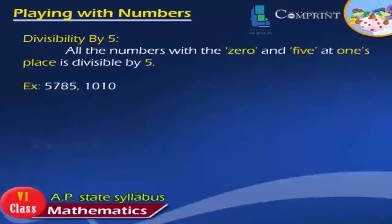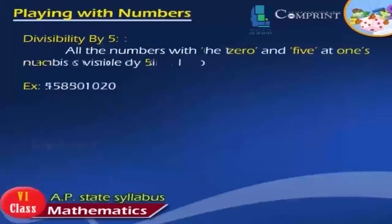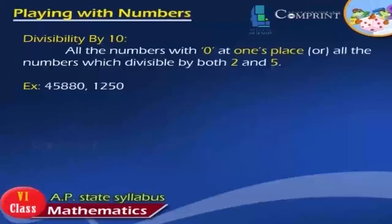Divisibility by 5: All numbers with 0 or 5 at their ones place are divisible by 5. Examples: 5785, 1010. Divisibility by 10: All numbers with 0 at their ones place — that is, all numbers divisible by both 2 and 5 — are divisible by 10. Examples: 45,880 and 1250.